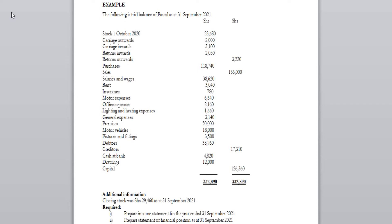Hello, welcome to today's class. We have an example here with a trial balance and questions. We are required to prepare an income statement for the year ended 31st September 2021, and the second part is to prepare a statement of financial position as at 31st September 2021. We already prepared the income statement in our previous video — check the link below. Today we will prepare the second part: the statement of financial position.